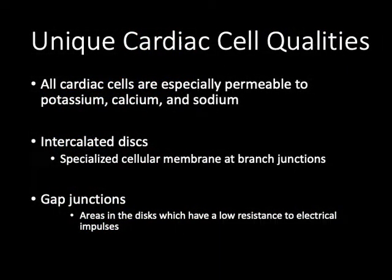All cardiac cells are specially permeable to potassium, calcium, and sodium — the three electrolytes we discuss most in cardiac medicine because of their significant role in cardiac dysrhythmias and function. Intercalated disks are specialized cellular membranes located at branch junctions, and gap junctions within those disks have lower resistance to electrical impulses. These structures allow electricity to move incredibly quickly and in a coordinated fashion from one cell to the next.